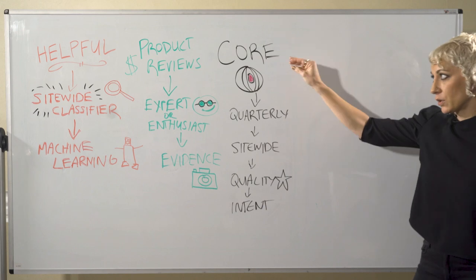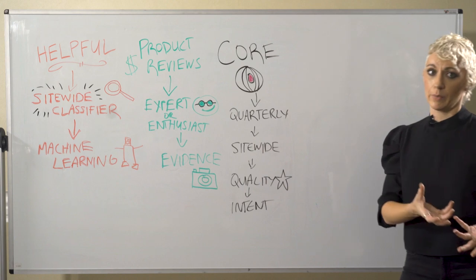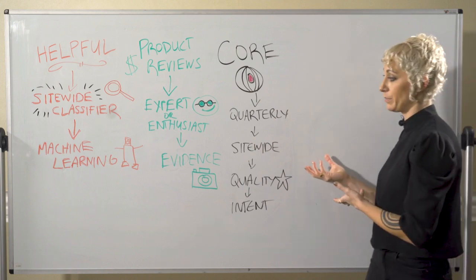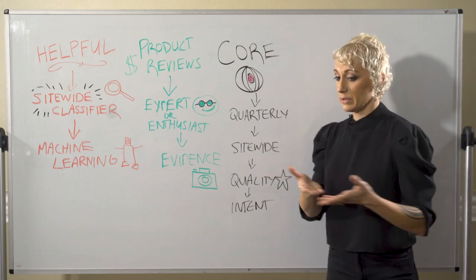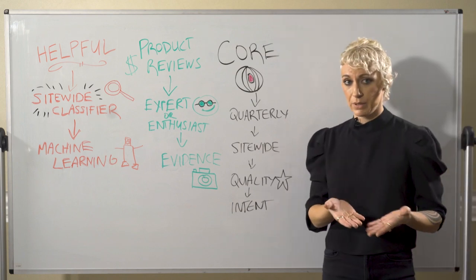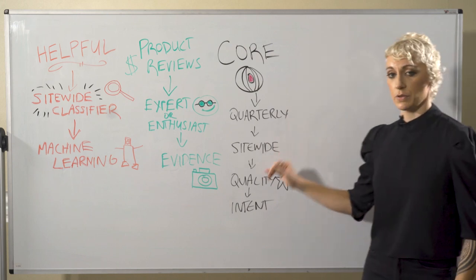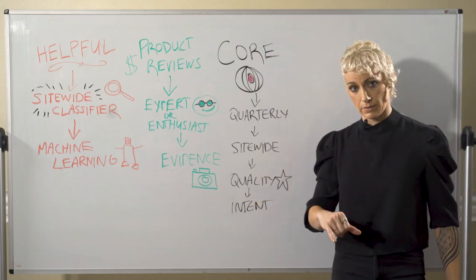When they launch a core update, you often see that the types of results that are ranking will change. So you might see a dictionary website start to rank during a core update. So let's say the example is dogs. After a core update happens, perhaps a dictionary takes the number one position. That's because Google determined most users want to define what the word dog means.